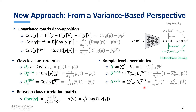Sample-level uncertainties can be derived by aggregating all the class-level uncertainties. Furthermore, the correlation matrix can also be obtained from the covariance matrix, providing the correlation information of each pair of classes. While the traditional entropy-based approach is only able to quantify sample-level uncertainties, the variance-based approach can further provide class-level uncertainties as well as the between-class correlations.